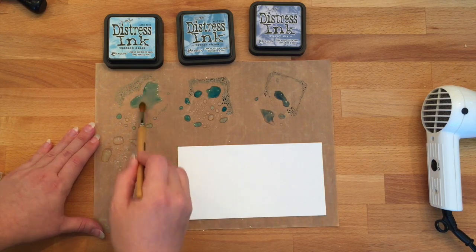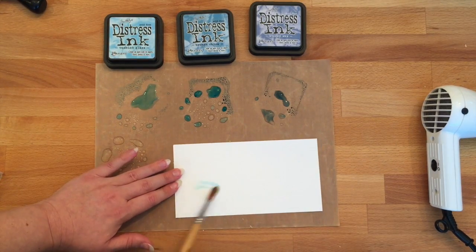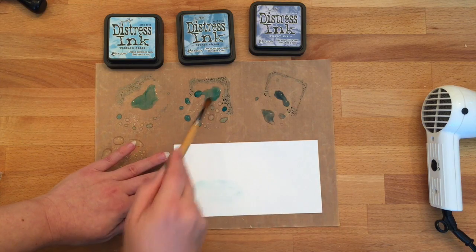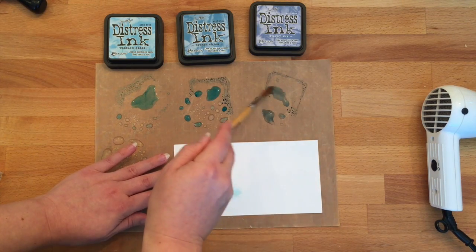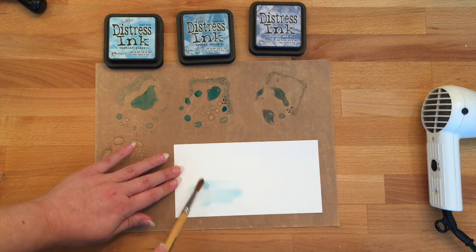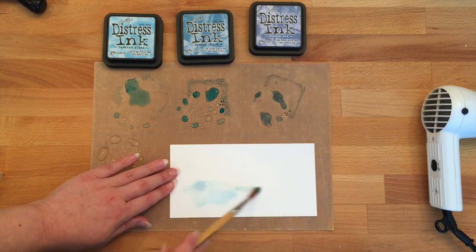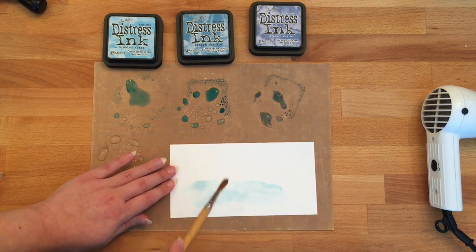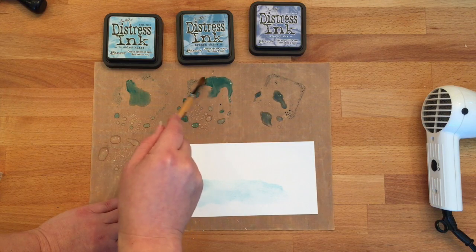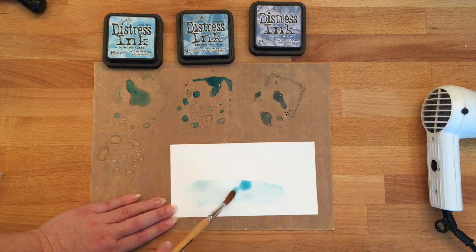You can see I sprayed once and then decided to add a bit more water, and that was simply because there wasn't enough water-to-ink ratio to get it as smooth and as light of a color as I would like. So then you just put the color onto your watercolor paper.